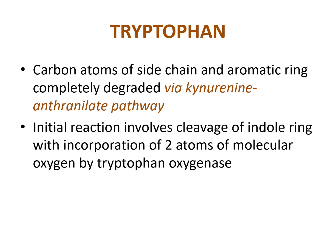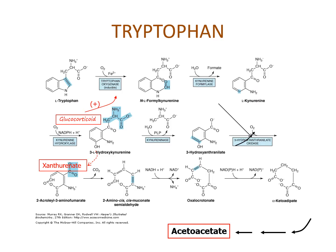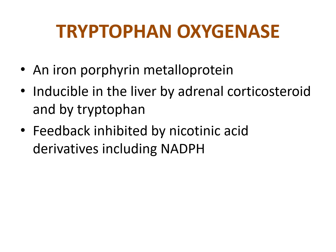Tryptophan: carbon atoms of the side chain and aromatic ring are completely degraded via the kynurenine and 2-amino-3-carboxymuconate semialdehyde pathway. The initial reaction involves cleavage of the indole ring with incorporation of two atoms of molecular oxygen by tryptophan oxygenase, an iron porphyrin metalloprotein inducible in the liver by adrenal corticosteroids and by tryptophan. The enzyme is feedback inhibited by nicotinic acid and its derivatives, including NADH. Tryptophan is eventually metabolized to acetoacetyl-CoA.